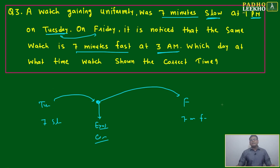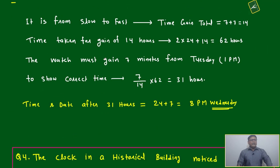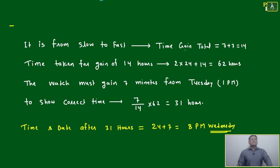We can just put our best friend number line, the real number line. Just try to understand what is happening here. It is from slow to fast. Time gain total: this is minus 7 and this is plus 7. Total time gain is 14 minutes.